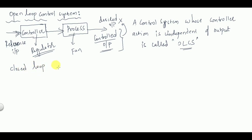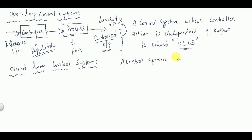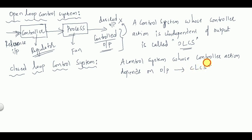The next type is the closed loop control system. A closed loop control system is a control system whose controller action depends on the output. There is some mechanism which makes the controlled output our desired output, and such type of mechanism is called a feedback mechanism. I'll show you from the block diagram.